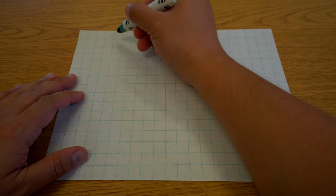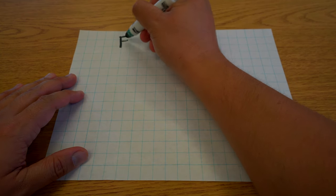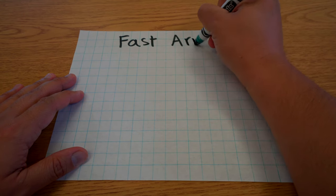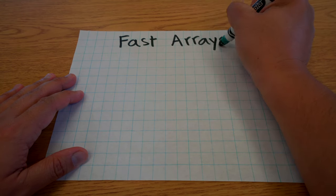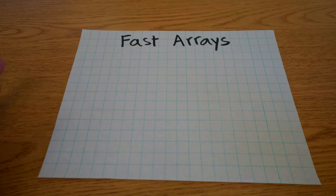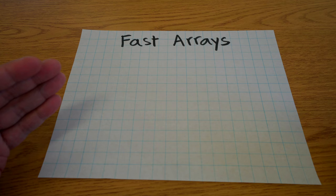Okay, today we're going to be talking about fast arrays. Now, whenever we talk about arrays, we're talking about rows and columns organized so that they look like a square or a rectangle.